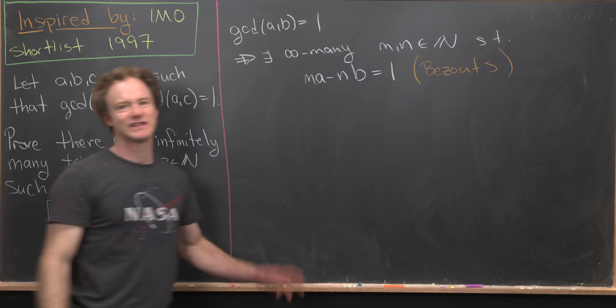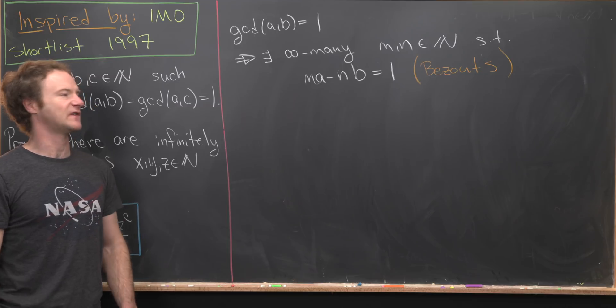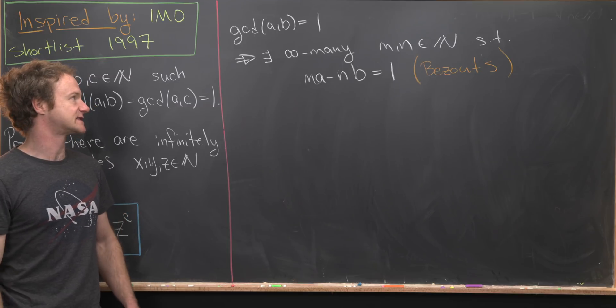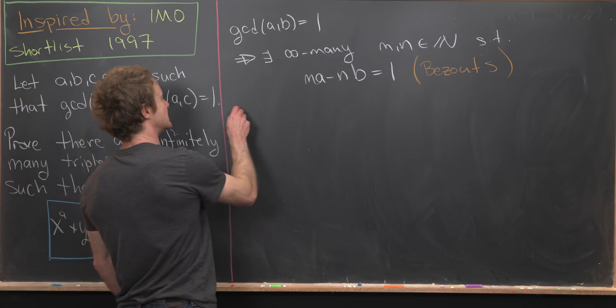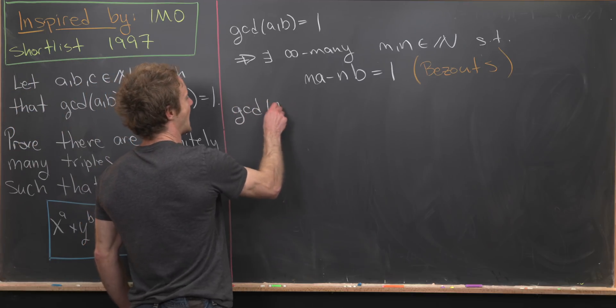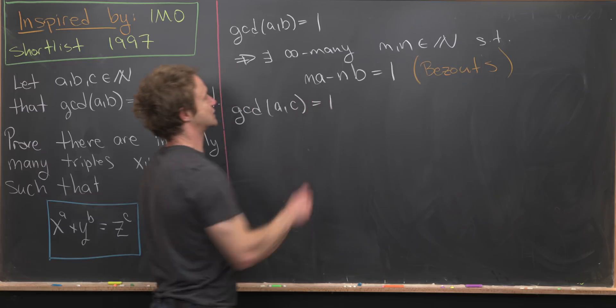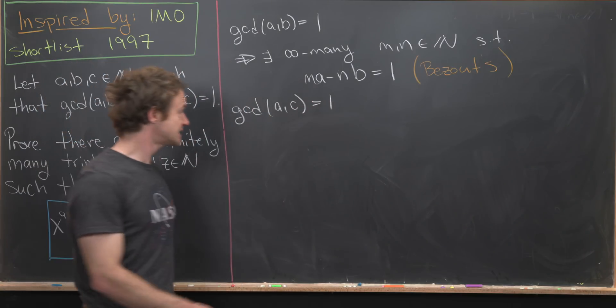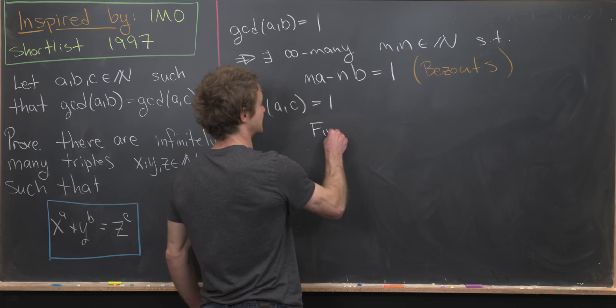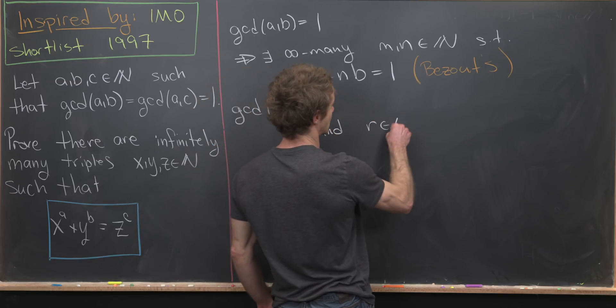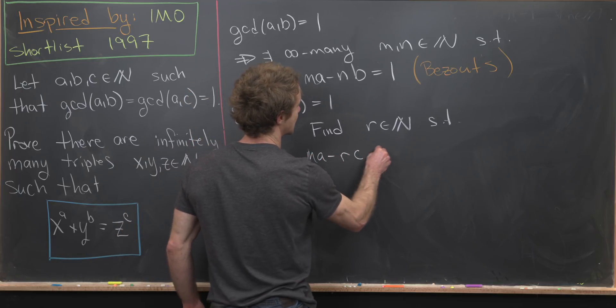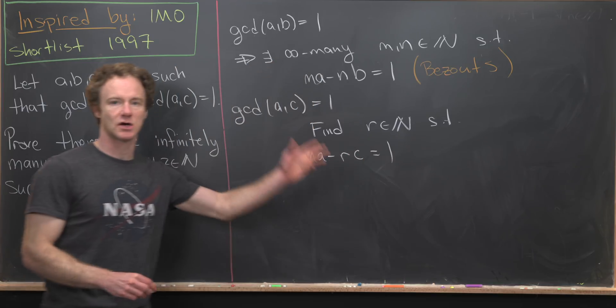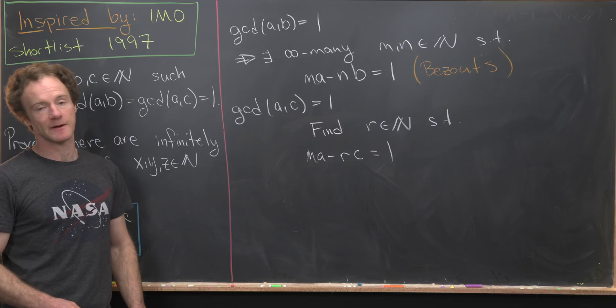So I'll let you guys check that, but that should be something that is fairly familiar for these contest type problems. But then furthermore, since the GCD of A with C is equal to 1, but now using this fact, what we can do is find an additional number R such that we have MA minus R times C is equal to 1.